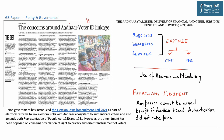This news discusses the concerns around Aadhaar voter ID linkage and why the Election Commission is keen on voters linking their Aadhaar with voter IDs. The union government has introduced the Election Laws Amendment Act of 2021 as part of electoral reforms, making amendments in the Representation of People Act 1950 and 1951. However, this amendment has been opposed with concerns raised regarding violation of right to privacy and disenfranchisement of voters.